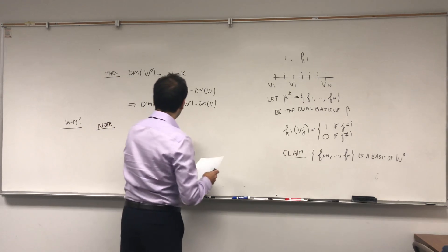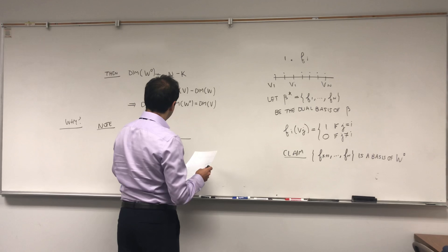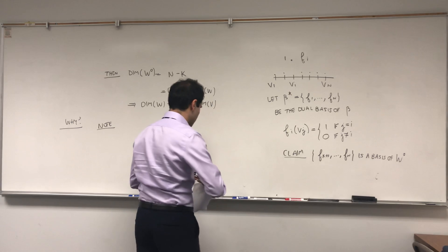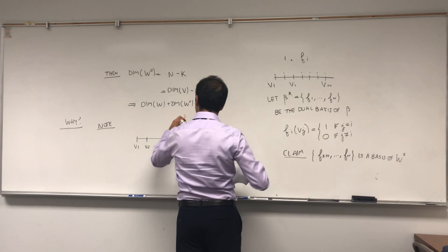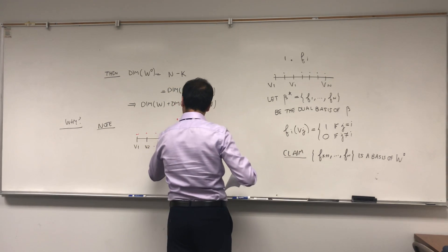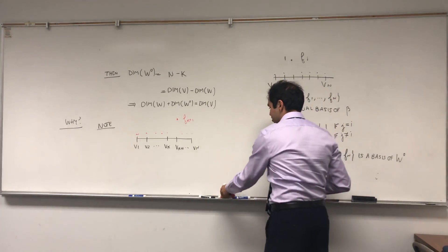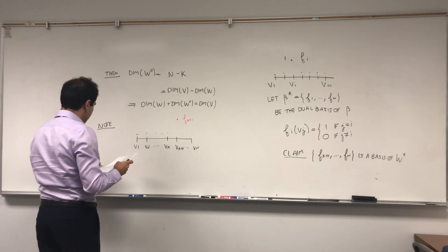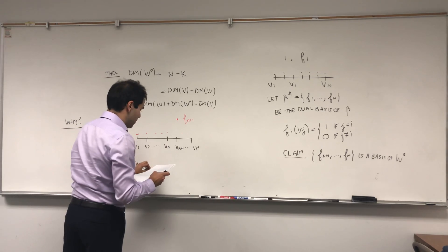So note, what does Fk plus one look like? v1, v2, dot dot dot, vk, vk plus one, dot dot dot, vn. Look, Fk plus one, it's one here and then zero everywhere else. In particular, it's zero at the first k vectors. So note, Fk plus one equals zero on v1, v2, dot dot dot, vk.